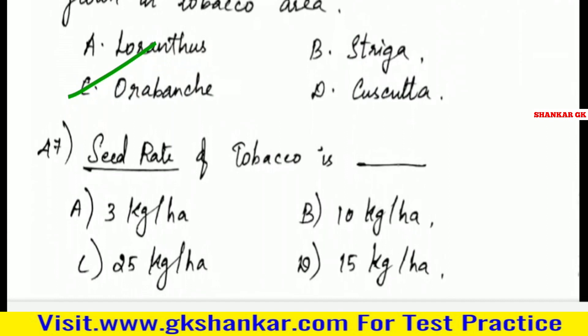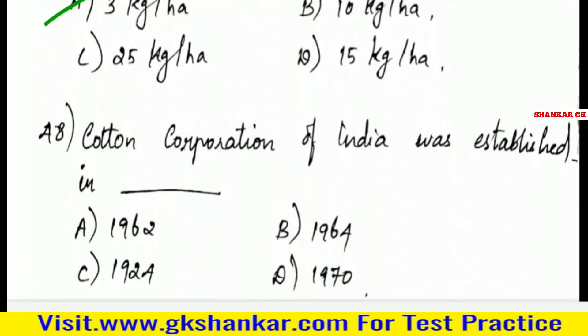Forty-seventh question: Seed rate of tobacco is — A. 3 kg per hectare, B. 10 kg per hectare, C. 25 kg per hectare, D. 15 kg per hectare. Answer: A. 3 kg per hectare.